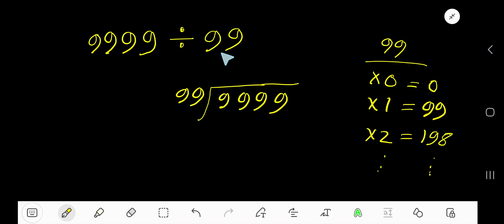9999 divided by 99. 99 is the divisor, so we need the multiplication table of 99. 99 times 0 equals 0, 99 times 1 equals 99, 99 times 2 equals 198.